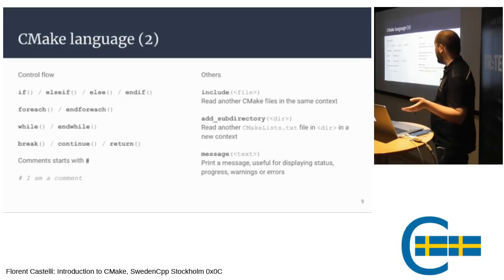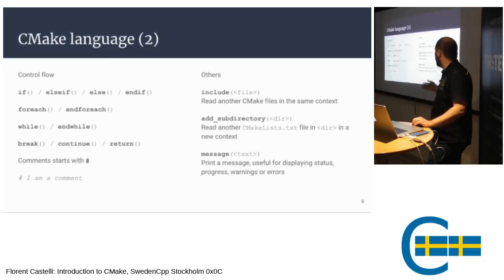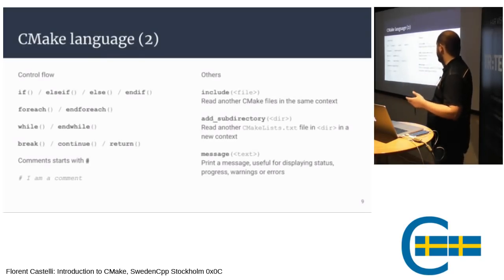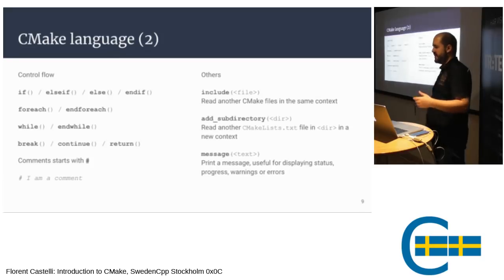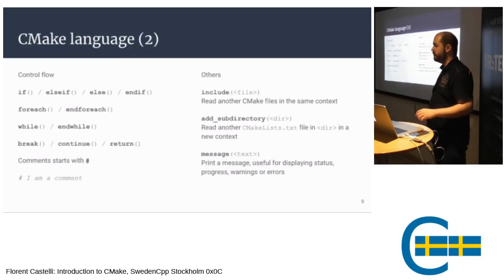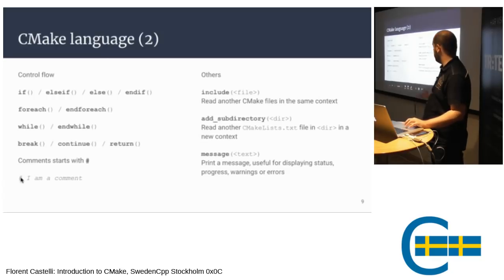The CMake language has control flow: `if`, `elseif`, `else`, `endif`. All control flow instructions end with `end` plus the name of the opening instruction — so `foreach` ends with `endforeach`, `while` ends with `endwhile`. You also have `break`, `continue`, and `return`, which work the same as in C++ loops. Comments start with a `#` (hashtag/pound/sharp).